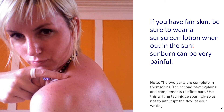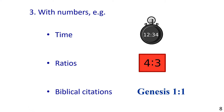The third way to use a colon is with numbers. For example, with time: 12:34. With ratios: 4:3. Biblical citations: Genesis chapter 1 verse 1 is written as Genesis 1:1.